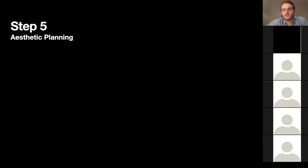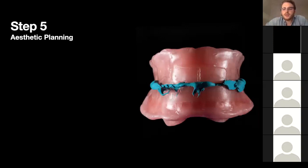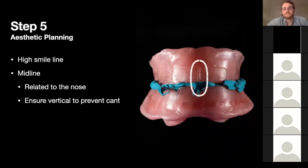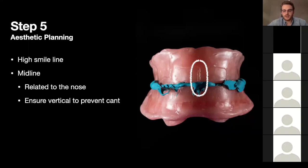Next, move on to aesthetic planning. The main lines to mark on the wax rims are: the high smile line — get the patient to smile and mark just under the lip with a wax knife as a reference for your technician; the midline — related to the nose and chin, ensuring it's nicely vertical. This can be tricky because if you're off to one side in the dental chair it's very easy to put a slight lean in — usually right to left if you're right-handed.